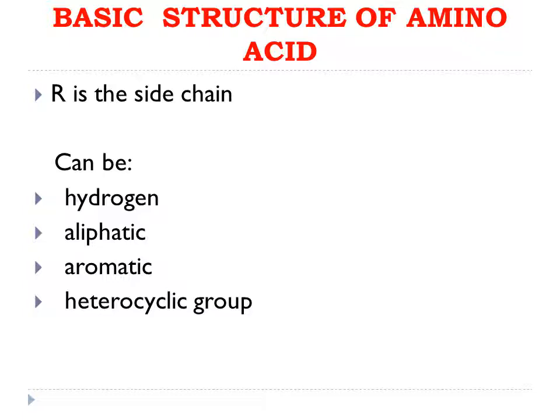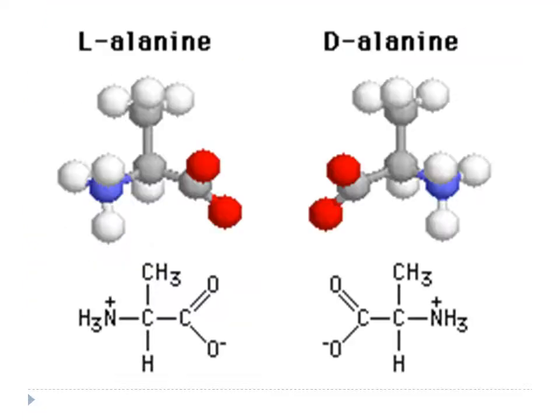The basic structure of an amino acid contains at least one carboxylic group, one amino group, one hydrogen atom, and one side chain denoted by R. That R chain can be a hydrogen atom, an aliphatic side chain, an aromatic side chain, or a heterocyclic group-containing side chain.